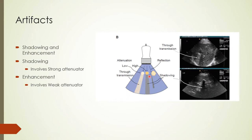Behind a strong attenuating object you can see low-intensity dark shadows, and behind a weak attenuating object there are high-intensity transmitted shadows, as shown on the images on this slide.